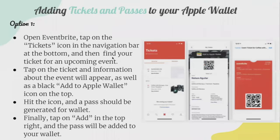To add tickets and passes to your Apple Wallet, open Eventbrite and tap on the tickets icon in the navigation bar at the bottom. Find your ticket for an upcoming event, tap on it, and information about the event will appear along with a black 'Add to Apple Wallet' icon at the top. Hit the icon and the pass will be generated. Finally, tap Add in the top right and the pass will be added to your wallet.